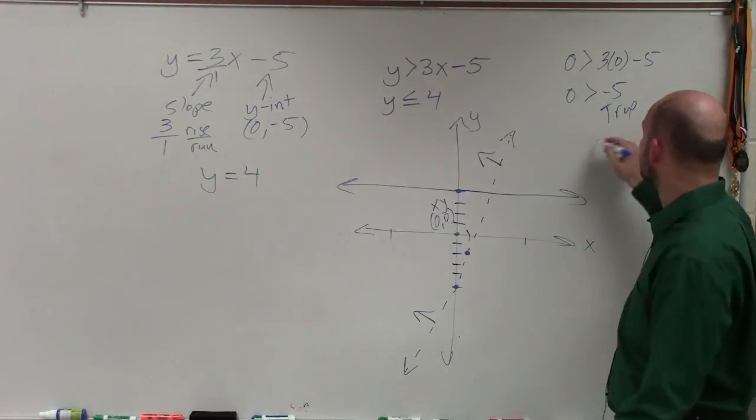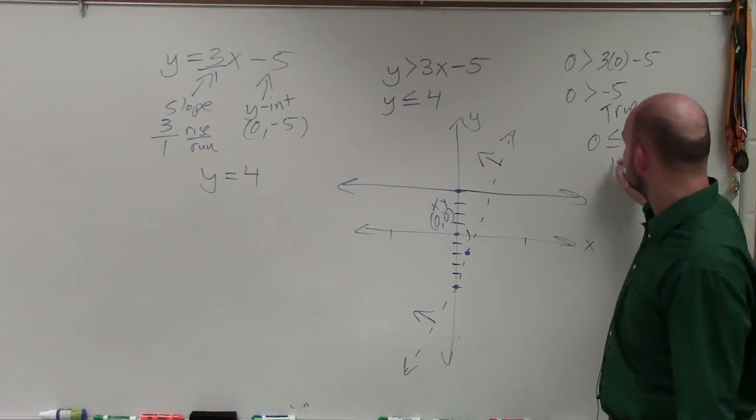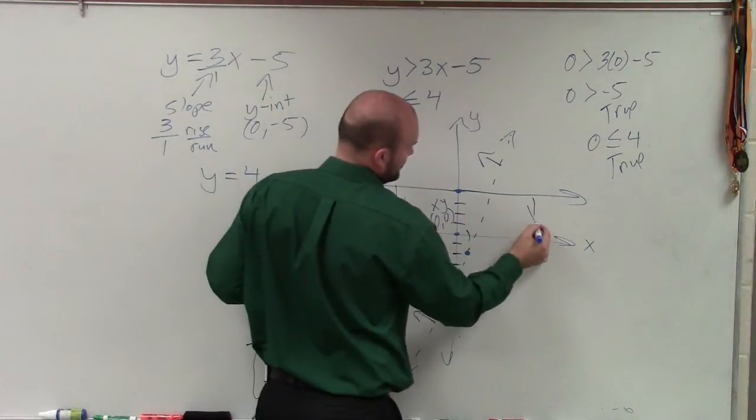Then I go with this one. Now, I don't have an x, but I can put a 0 in for the y. And 0 is less than 4. That is also true. So therefore, since the test point is true for this line, I'm going to shade towards where it's true.